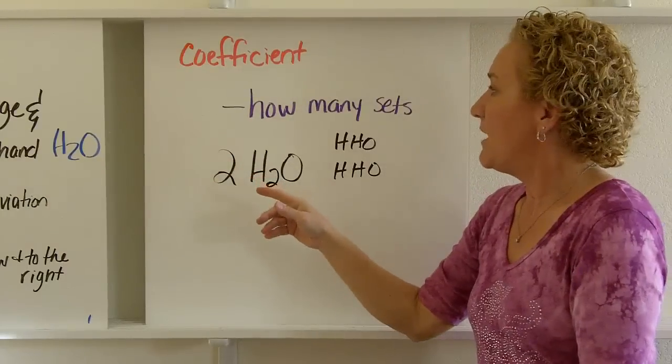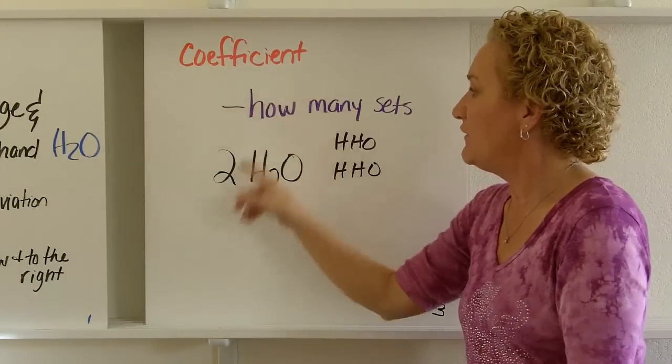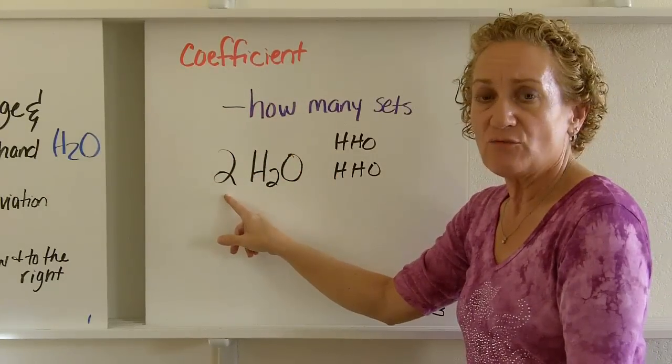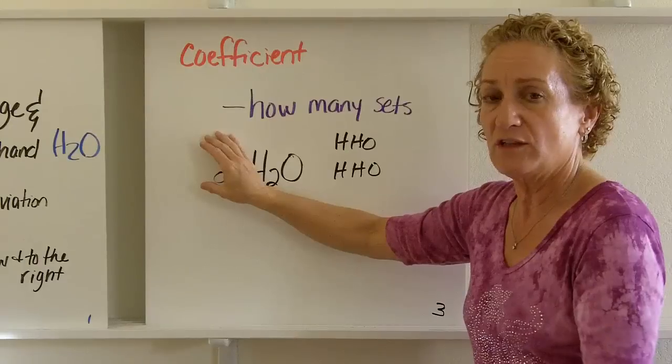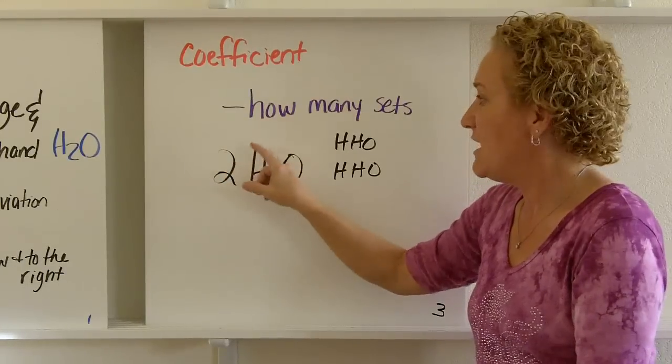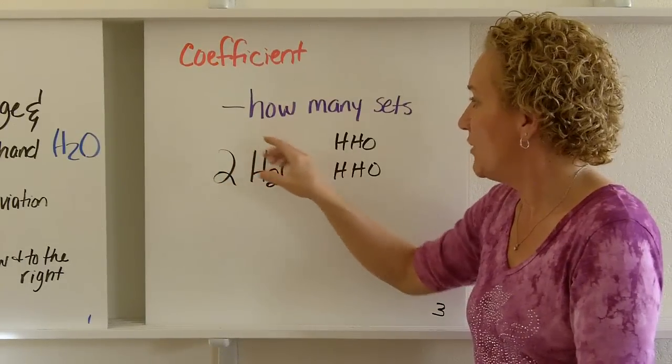Now, another thing we talk in chemistry about is a coefficient, and a coefficient is this number that goes right in front. Up until this point, we've not messed around with that number. And again, we won't for a little bit, but a coefficient tells you how many of these things called H2O we have.